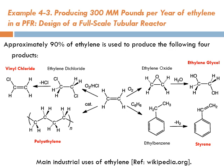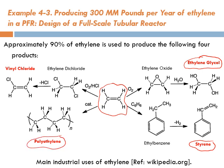Approximately 90 percent of ethylene is used to produce four products: ethylene glycol, which is what we want to produce in our plant; styrene, which can be further polymerized to produce polystyrene; polyethylene by direct polymerization; or vinyl chloride by reaction with chlorine. Vinyl chloride can be polymerized to produce polyvinyl chloride — the PVC used in the pipes in your house.